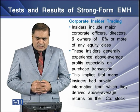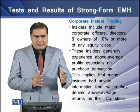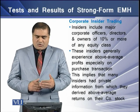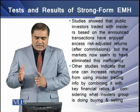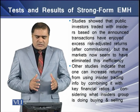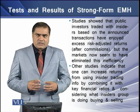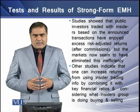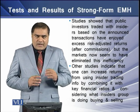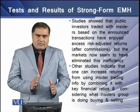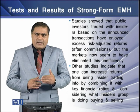This implies that many insiders have private information which they used to derive above-average returns on transactions of their own company's stocks. Studies also showed that public investors who traded alongside insiders based on announced transactions have enjoyed abnormal returns, but it seems that markets have corrected this anomaly. Other studies indicate that one can increase abnormal returns by combining insider-provided information with accounting ratios when making buying or selling decisions.